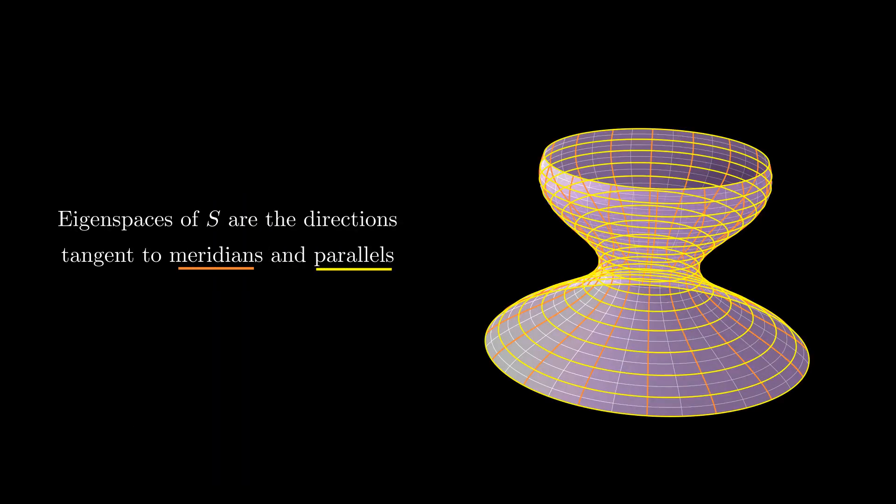Since the shape operator is self-adjoint, its eigenspaces are orthogonal, so the directions tangent to the parallels are eigenspaces as well.